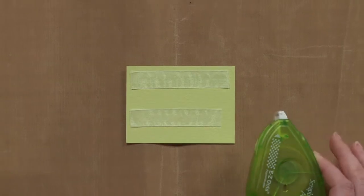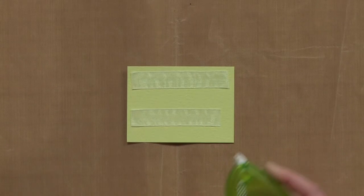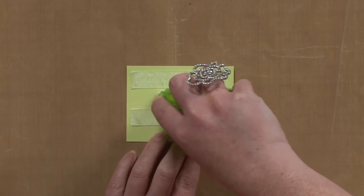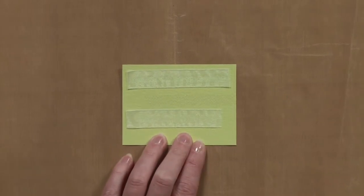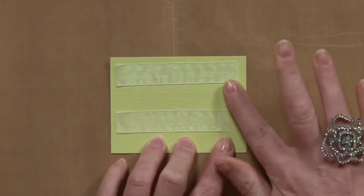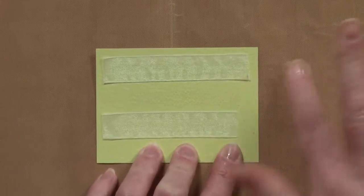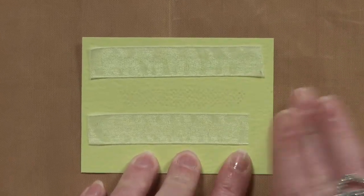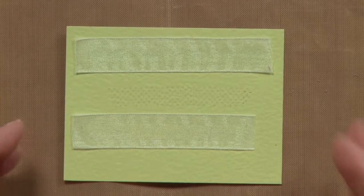One of the things that works really well with the dot dry tape runners is you can run that along and if you make a misstep it magically can just disappear. And that's really handy if you make a mistake because you don't want the mistake to show.